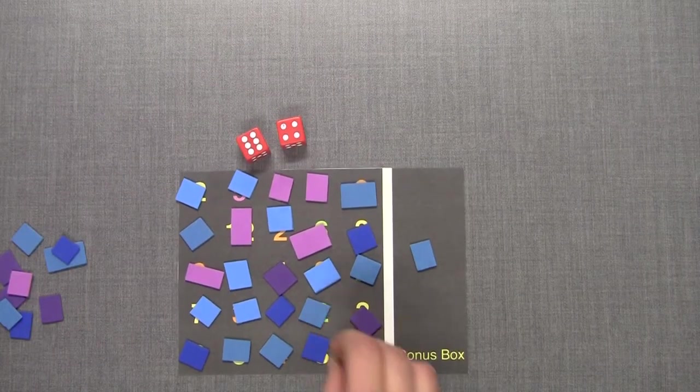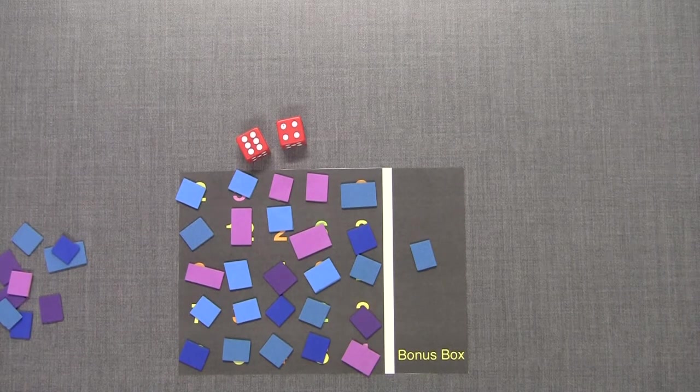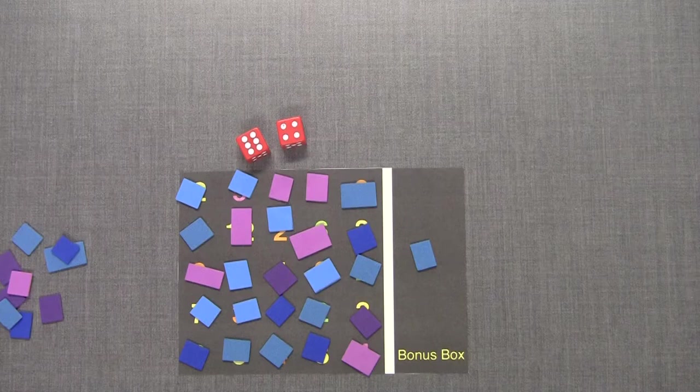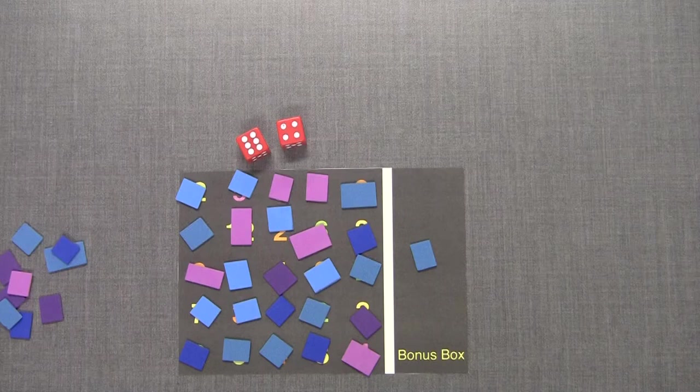The first person to black out or cover up all of the numbers on their game board wins the game. But other players can use the bonus chips to cover their board. You can seal the win if you have more bonus markers than you need to cover your board.